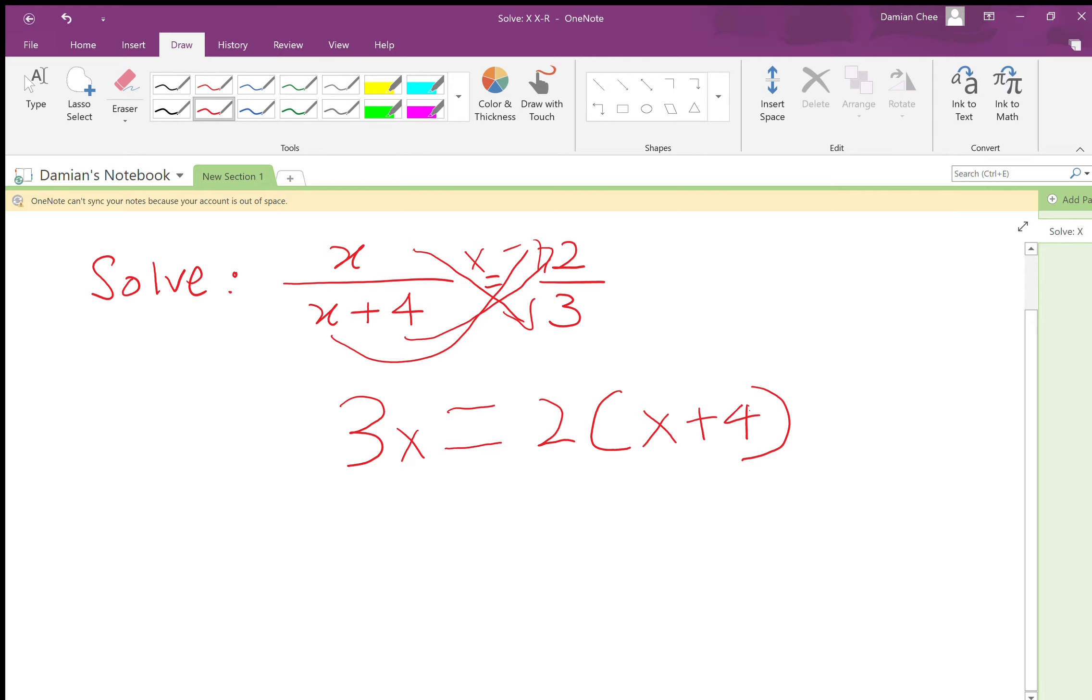Then after that, let's expand the brackets out first. So you'll have 3x equals 2x plus 8. Two times four is eight.